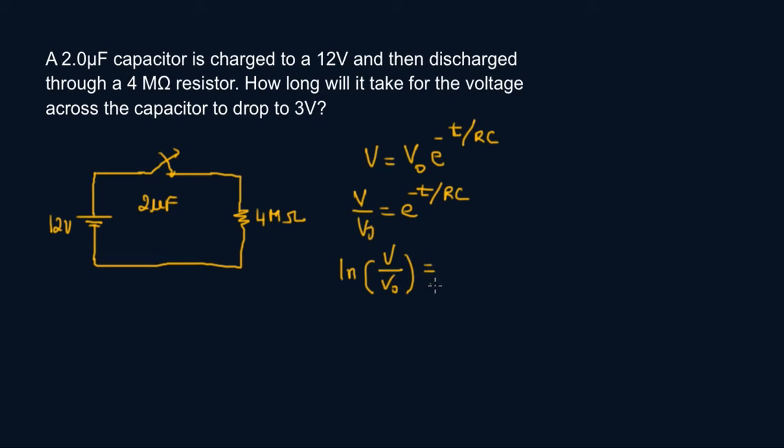equals minus t over RC, and therefore t is going to equal RC times ln of V over V0. RC is tau by the way for those of you who remember that.